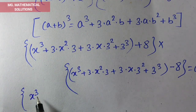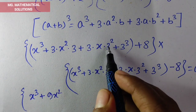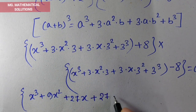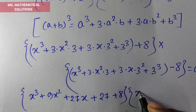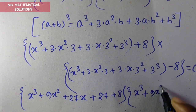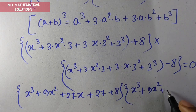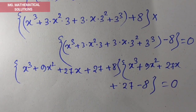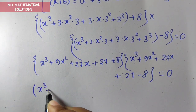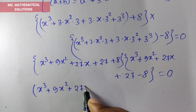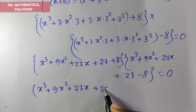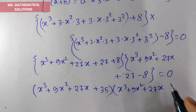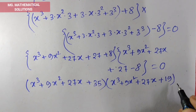So 3 times x² times 3 gives 9x². And 3² means 9, and 9 times 3 means 27. So (x+3)³ = x³ + 9x² + 27x + 27. Therefore x³ + 9x² + 27x + 27 minus 8 equals x³ + 9x² + 27x + 19 equals 0.